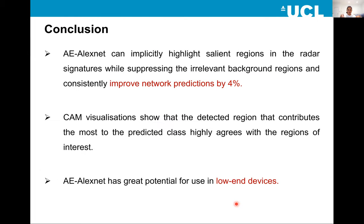The conclusions are: using the attention mechanism, we get a 4% improvement in network prediction without increasing the computational burden. The activation map visualizations show that the detected regions contribute most to the predicted class — it's entirely focusing on the activity region and not on the background. Additionally, this approach is not just for AlexNet — if we design our own network and embed the attention mechanism into it, it will have great potential for improving overall performance, and could be used for real-time classification in low-end devices.